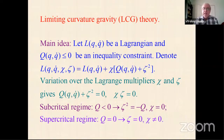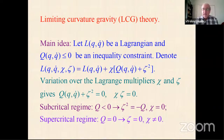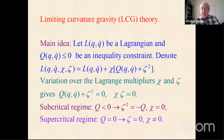Varying this Lagrangian with respect to the Lagrange multipliers gives two constraint equations. The solution can have two different regimes: the subcritical regime, when the observable Q is negative, in which zeta is determined by the constraints and chi vanishes; and the supercritical regime, when Q reaches its limiting value, in which zeta becomes zero and chi becomes a non-zero physical field.